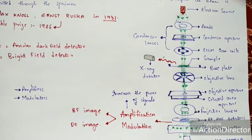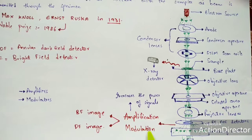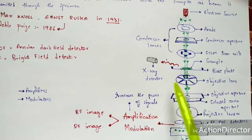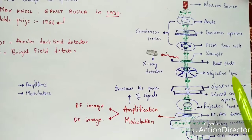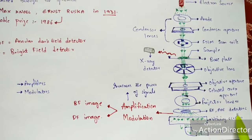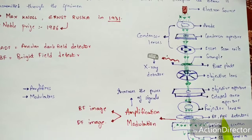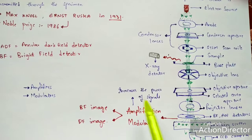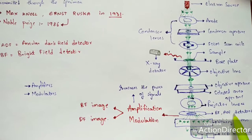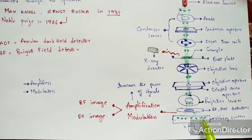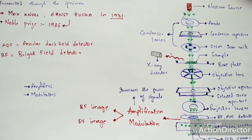Before the image enters the screen, it undergoes amplification and modulation. Amplification increases the power of the signals; modulation transmits the signals received from the sample. BF and ADF detectors are placed here — BF is the bright field detector and ADF is the angular dark field detector. These two detectors help form the bright field image and dark field image respectively. Finally, the image is placed on a screen visible to the naked eye, and CCD cameras record the signals received.